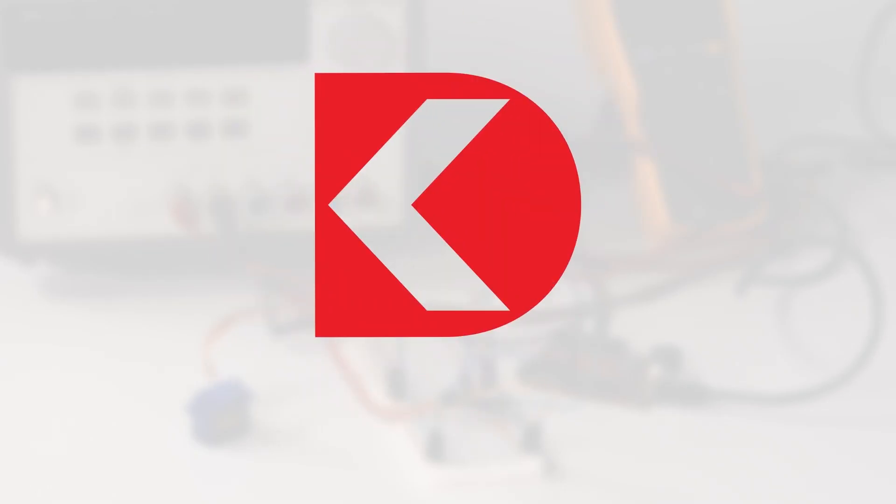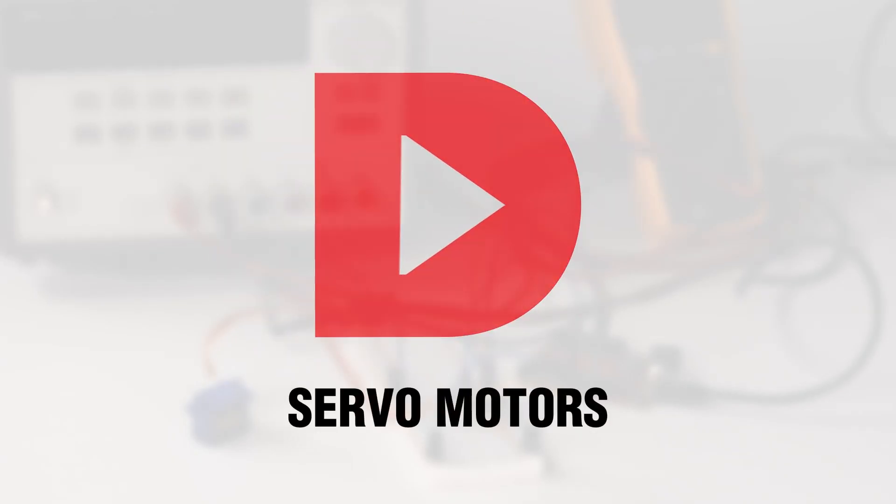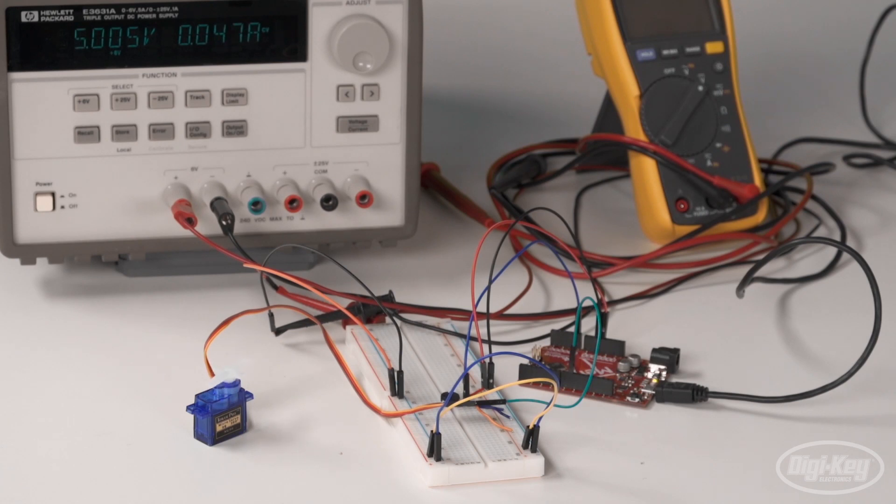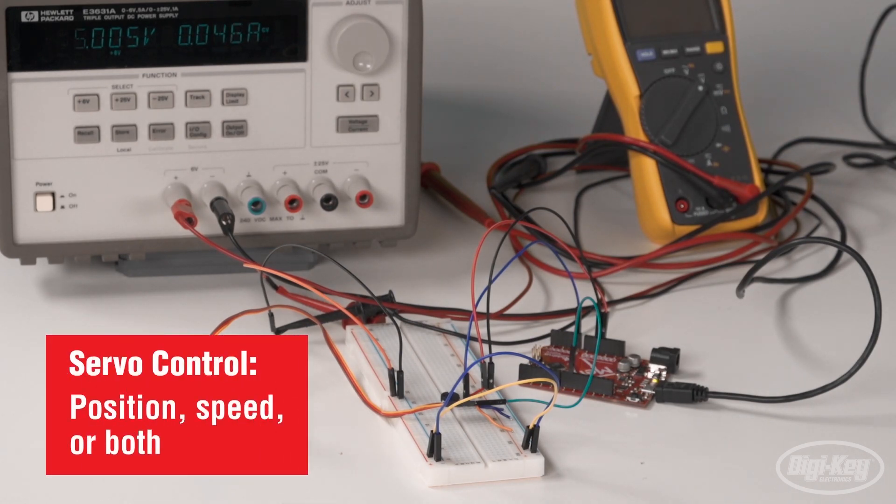In this episode, we're focusing on servo motors. All servos use a position encoder and controller as part of a closed-loop feedback system. Depending on the servo, that feedback loop controls position, speed, or both.